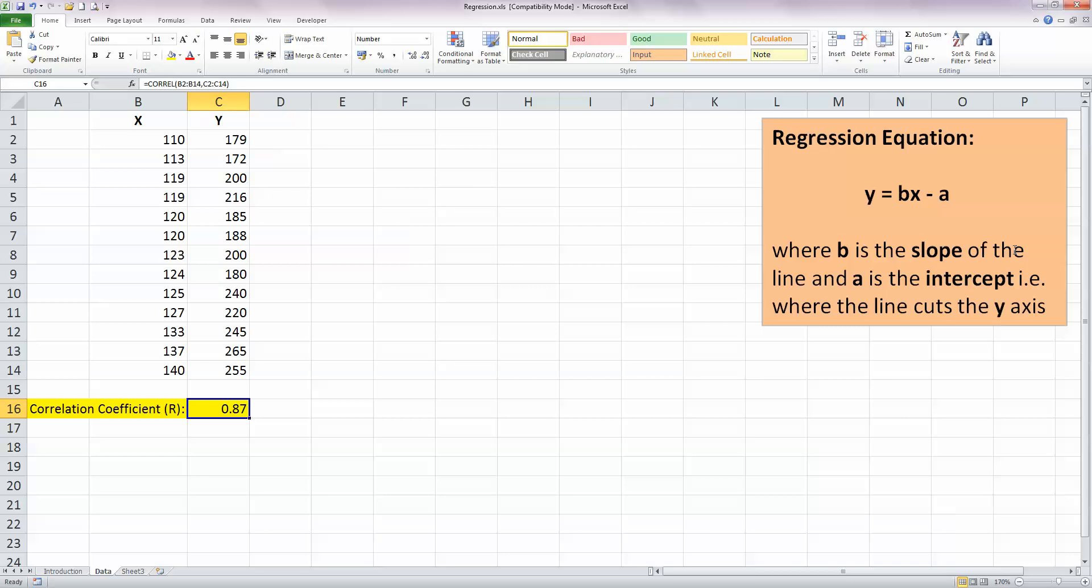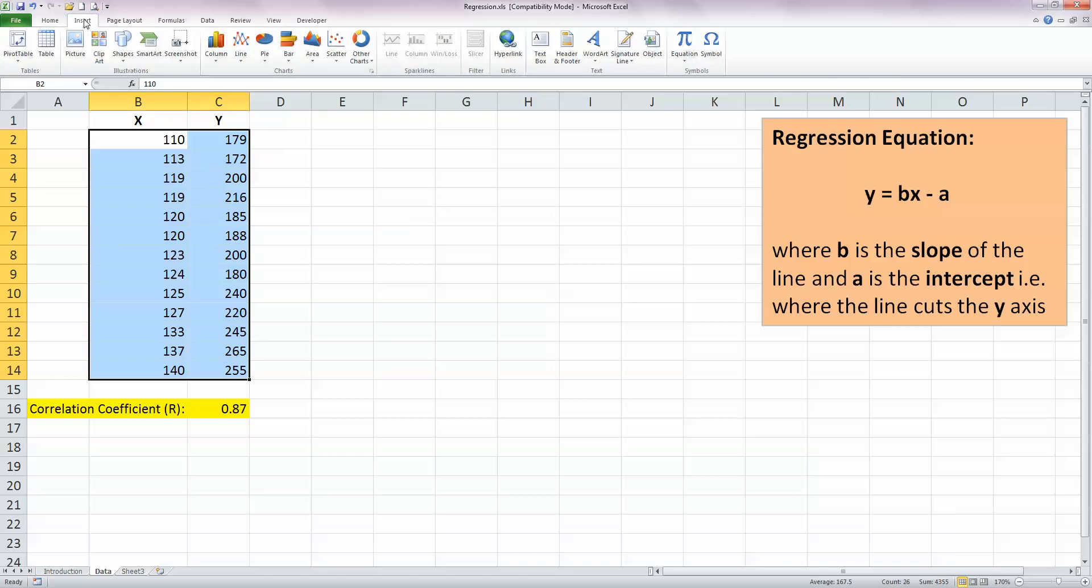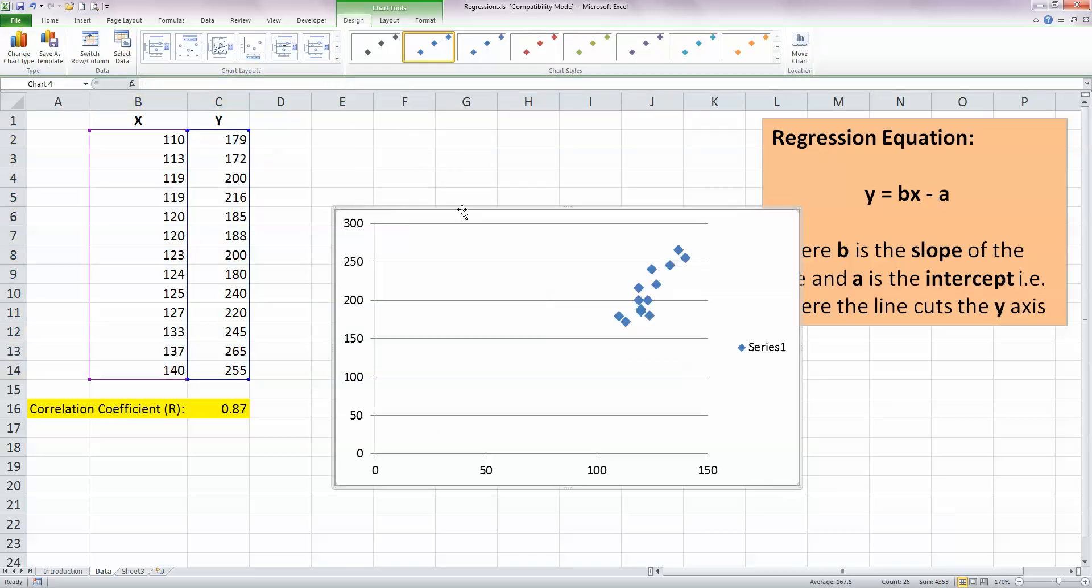So to make more sense of this, let's plot a chart of our data. So first off, let me select all my data in columns b and c. On the insert ribbon, the type of chart I need is a scatter chart. And I'm going to select this one here, scatter with markers only, the simplest scatter chart.